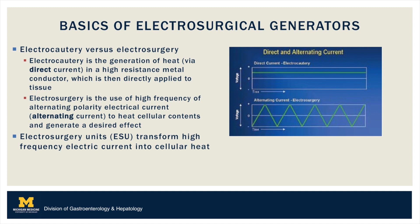The terms electrocautery and electrosurgery are often used interchangeably but in reality represent two distinct means to apply heat to tissue. Electrocautery represents direct application of heat generated by a direct current through a metal conductor. In endoscopy we typically use this with a heater probe. Electrosurgery on the other hand transforms alternating electric current to produce cellular heat thereby generating the desired tissue effect.